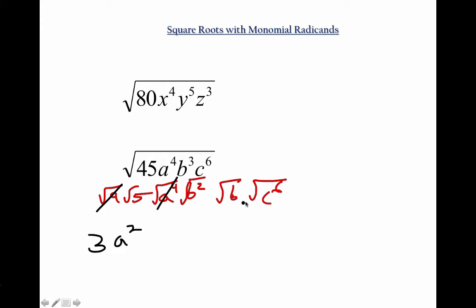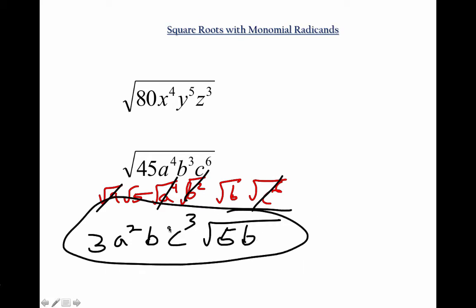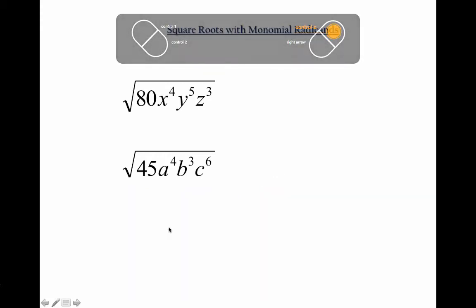Comes out of there. I got a B. Comes out of there. I got a C cubed. Comes out of there. What's left? 5B underneath the radical. There it is. Good times.